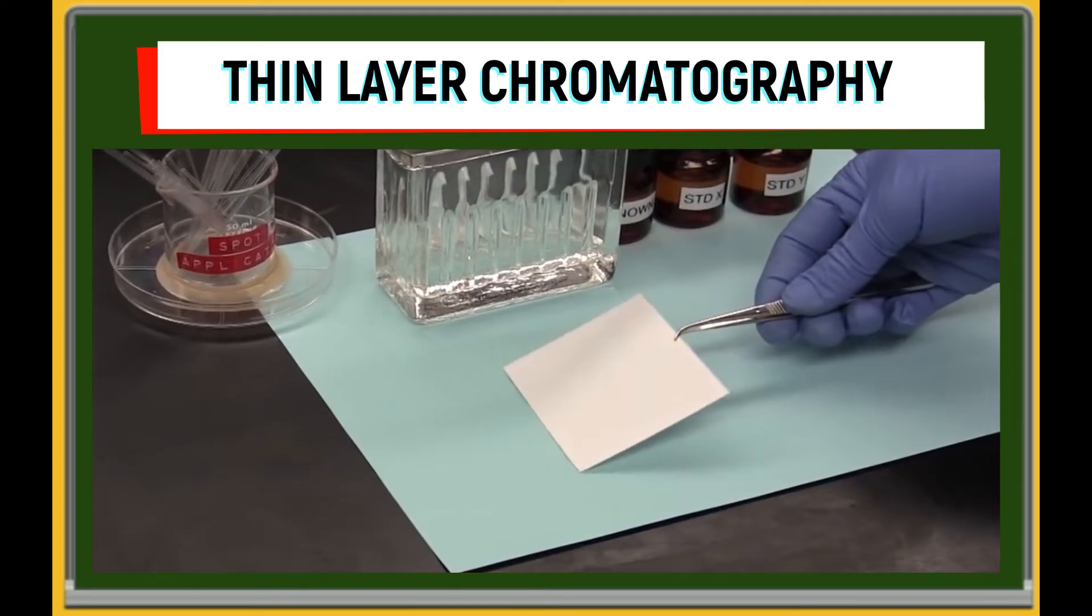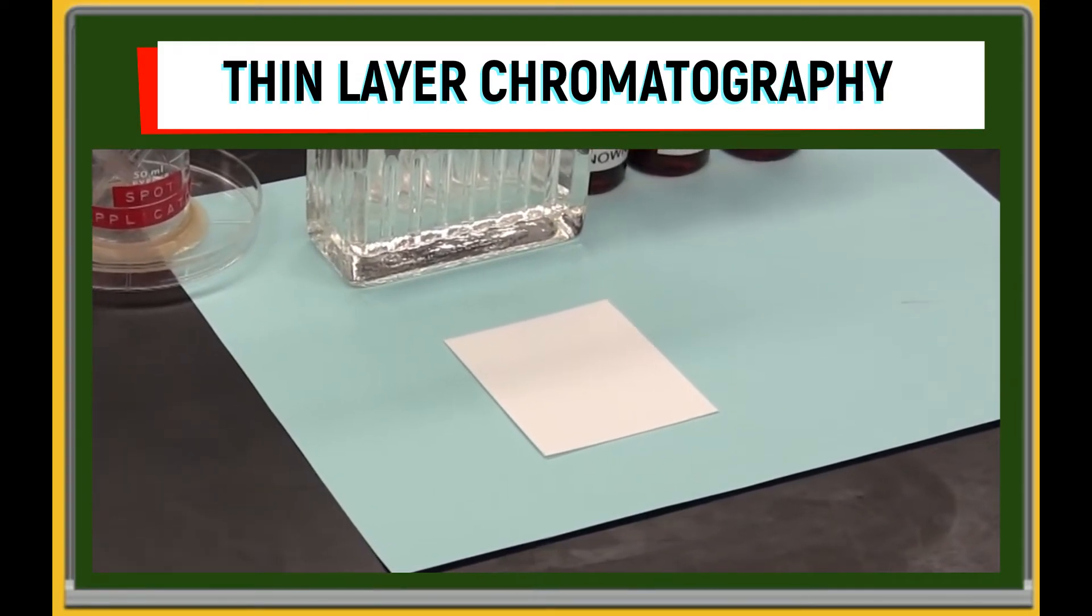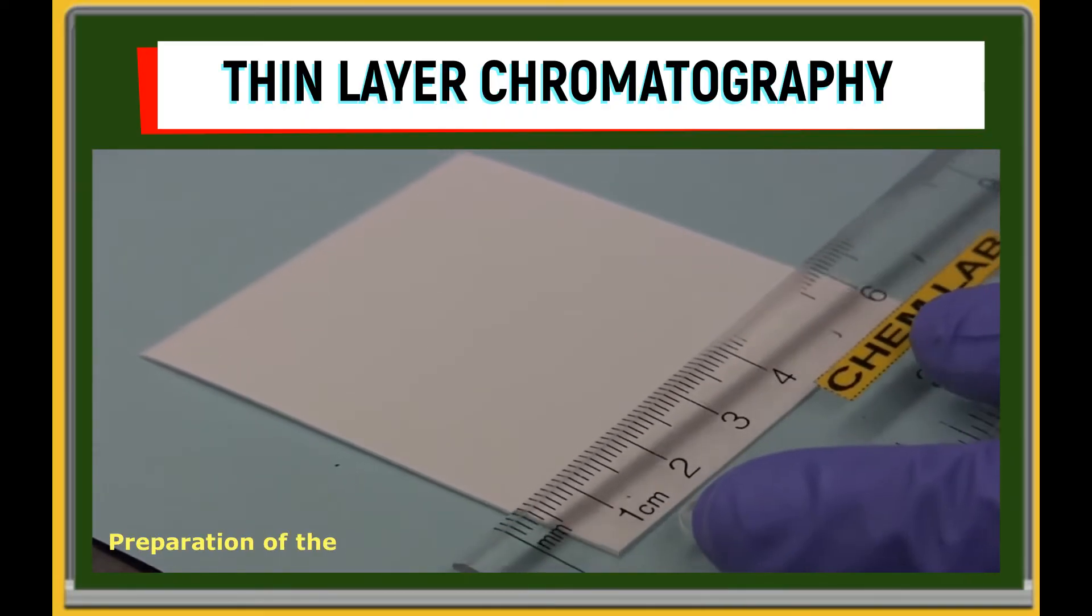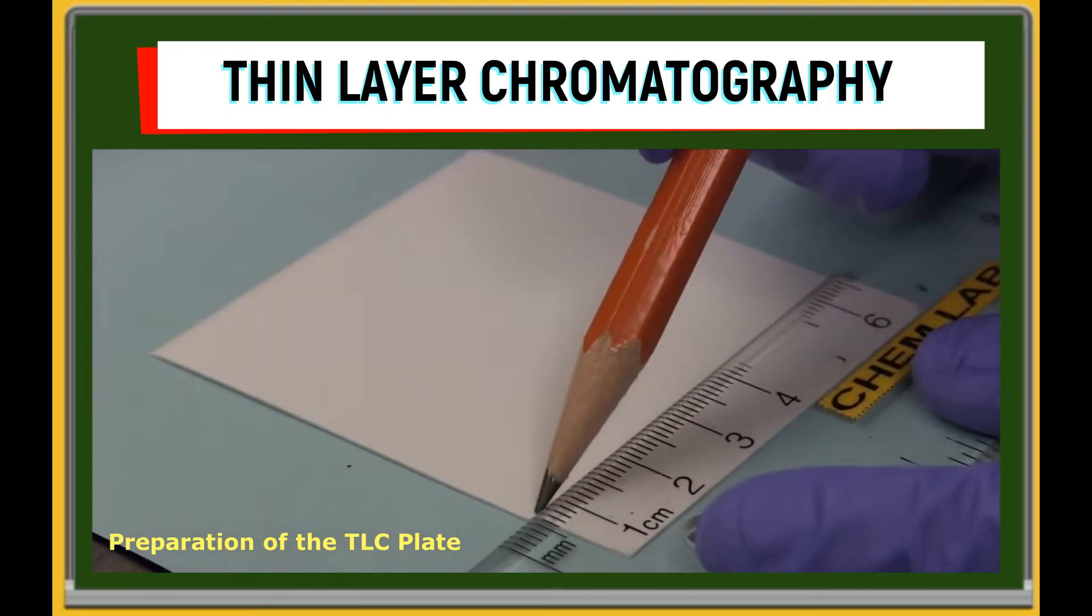Differences in the properties of the components of the mixture mean that they will each travel at different rates on the TLC plate. During the process, you need to prepare the TLC plate such as shown in the video.